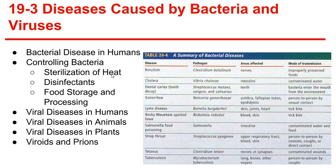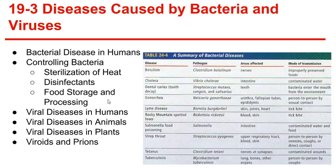Sterilization by heat can kill bacteria. Disinfectants are chemical solutions that kill pathogenic bacteria; however, these can create superbacteria — if there's a mutation in the bacteria that allows it to survive the disinfectant, it will keep reproducing and form a superbacteria immune to disinfectants. Food storage and processing: by storing foods in an unfriendly environment such as a very cold place, we can prevent bacteria from spreading, and cooking food is equivalent to sterilization by heat.